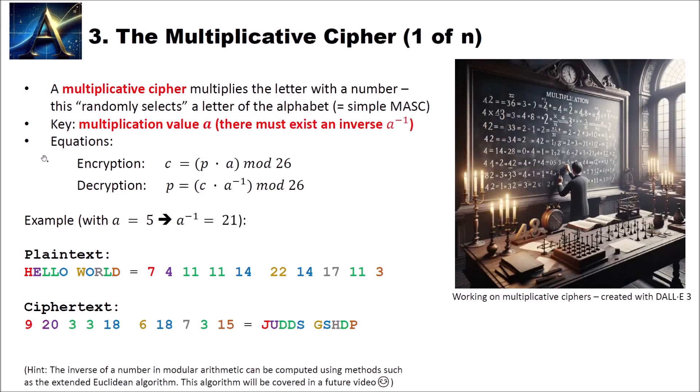Now let's have a look at the multiplicative cipher. A multiplicative cipher multiplies the letter with a number. This randomly selects a letter of the alphabet. What do I mean with randomly? It's not as easy as with a shift cipher, we jump using this construction in our alphabet. This is also a simple monoalphabetic substitution cipher as we will see.